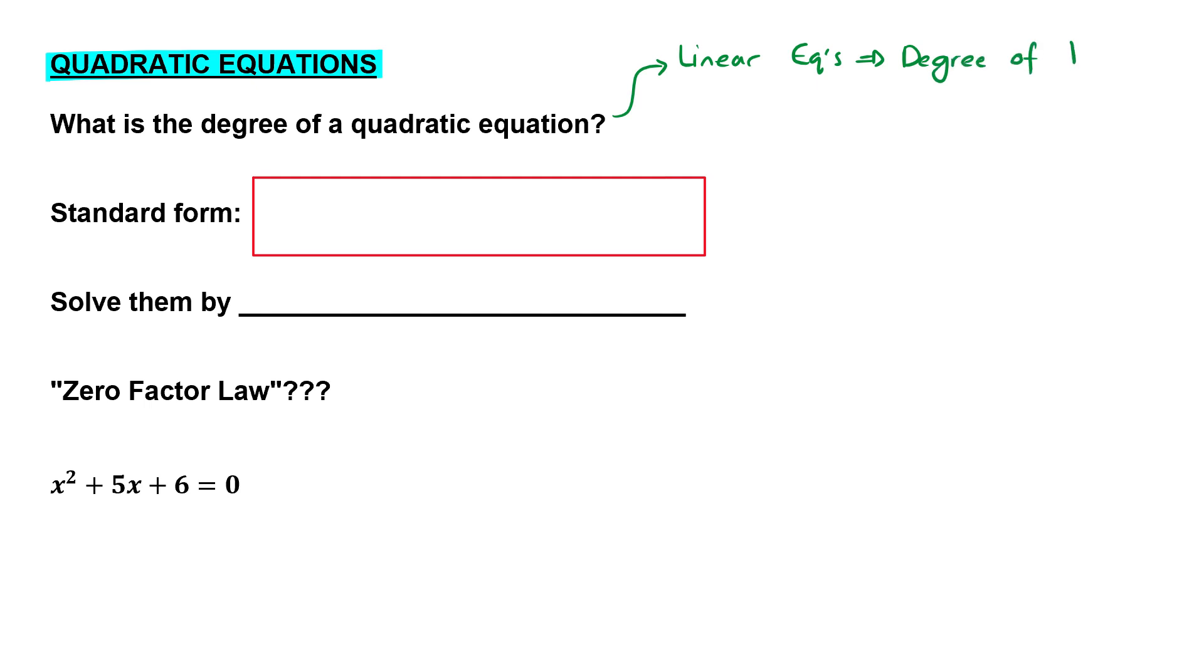However now when we start dealing with quadratic equations you'll see that they have a degree of 2. So just to recap a bit, a degree is the highest power or the highest exponent on a variable, so in other words on the x or the y or whatever we're solving for in an equation. So if the degree is 2 that means the highest exponent on x is 2.